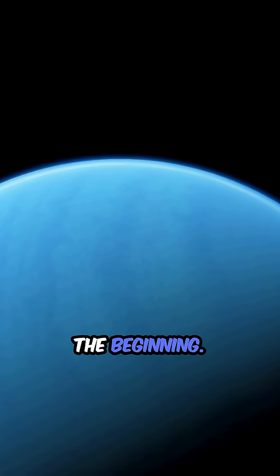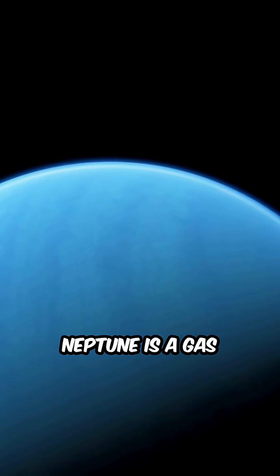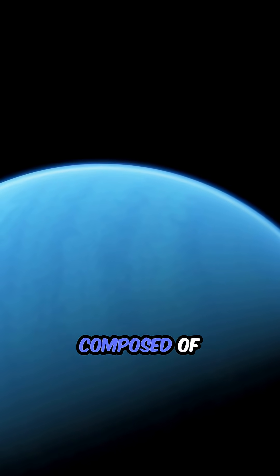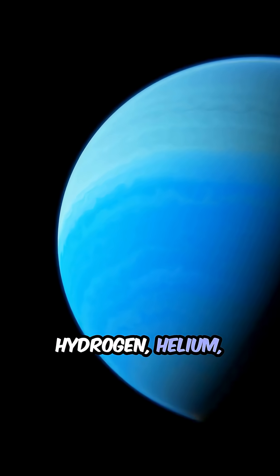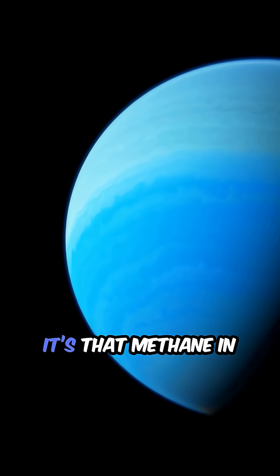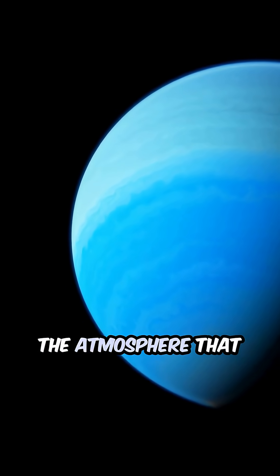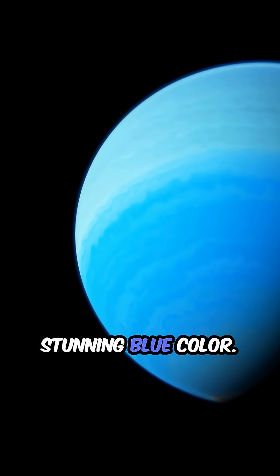But that's just the beginning. Neptune is a gas giant, primarily composed of hydrogen, helium, and methane. It's that methane in the atmosphere that gives Neptune its stunning blue color.